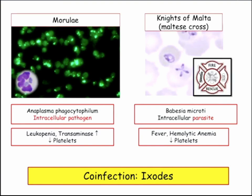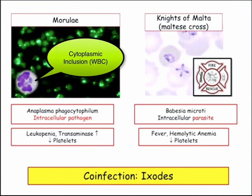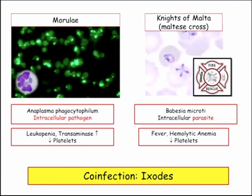On anaplasma, just to go back: morulae are going to be a description — a cytoplasmic inclusion. If they want to go there, just be familiar that it exists. But you're not going to see a lot of anaplasma on the exam.